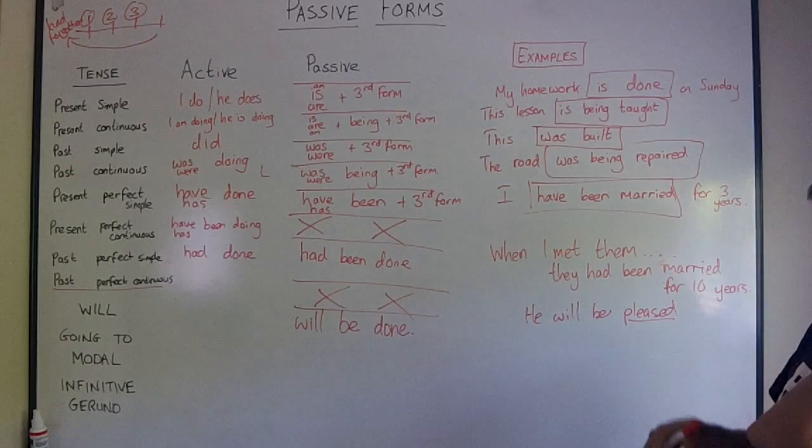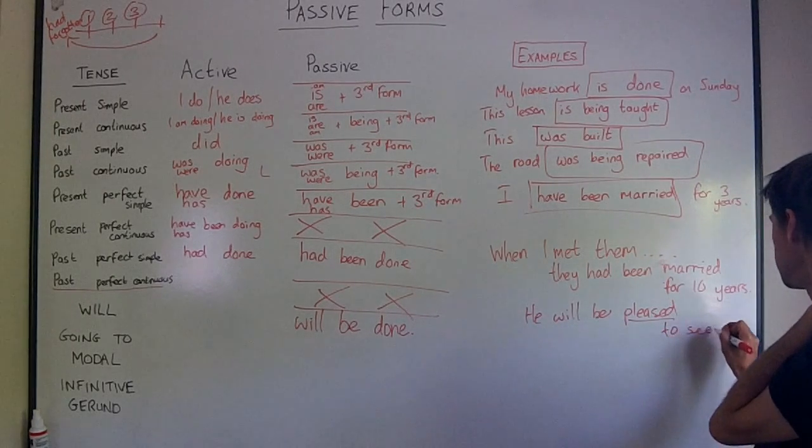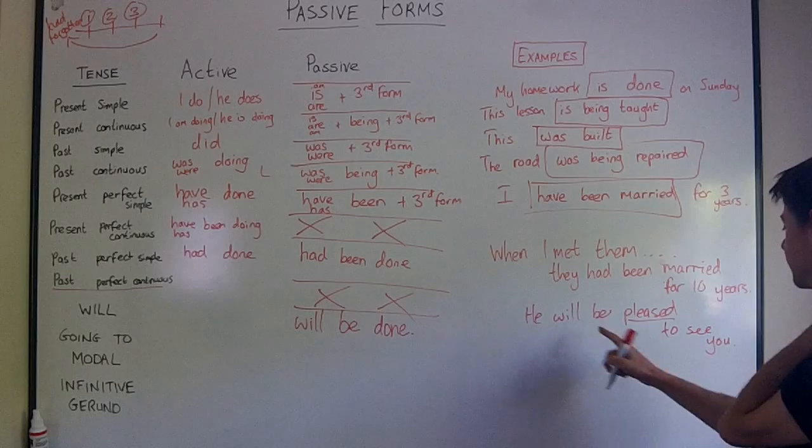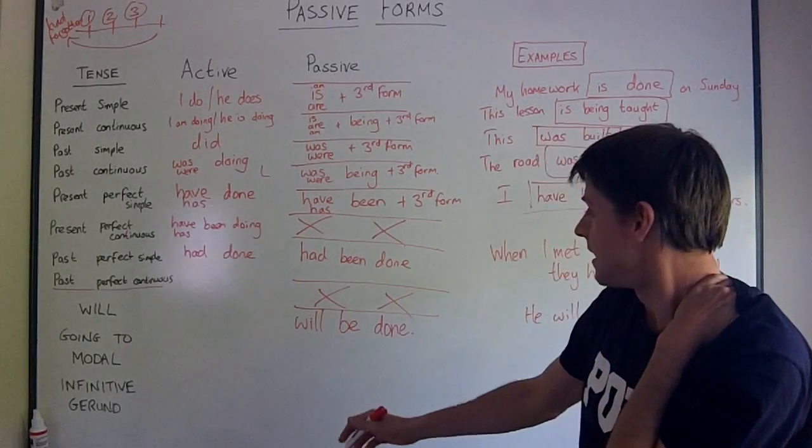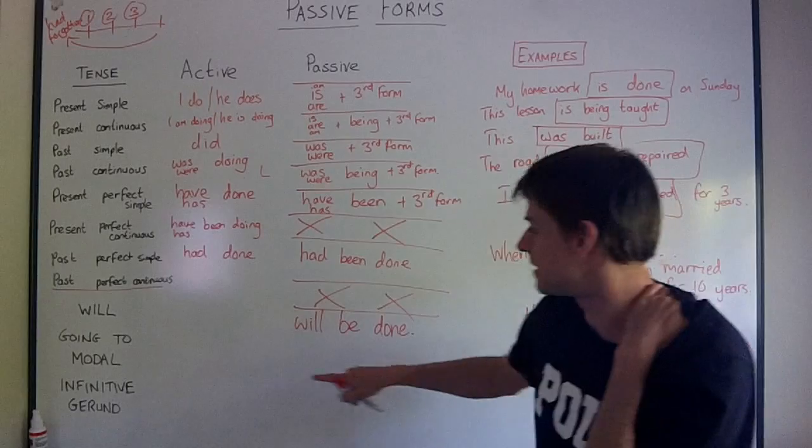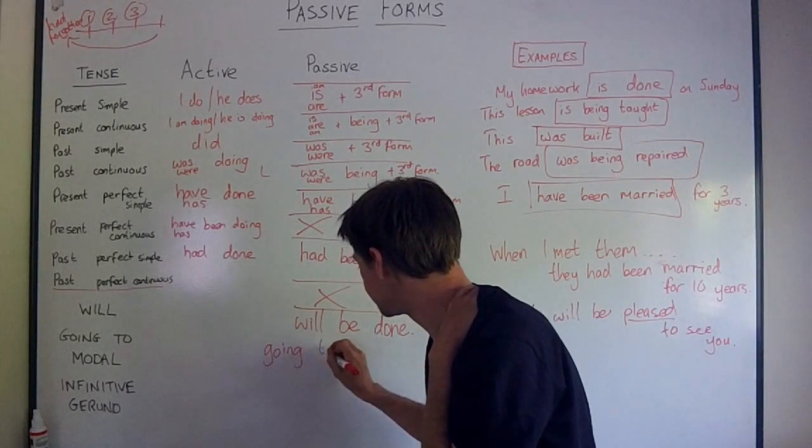He will be pleased to see you. He will be pleased to see you. This is actually a third form of the verb to please someone. So he will be pleased to see you. You could think of it as an adjective and just as a will be plus adjective, but it's a third form of a verb too. So will be done. Going to be done. You probably guessed this. Going to be done is the one here.